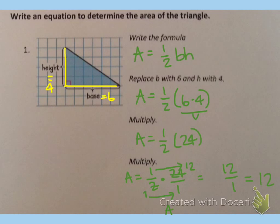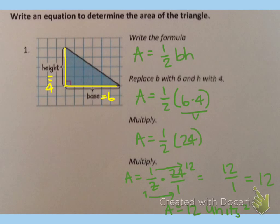This means that the area is twelve square units — twelve units squared.